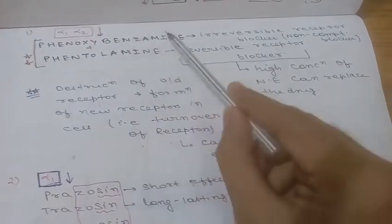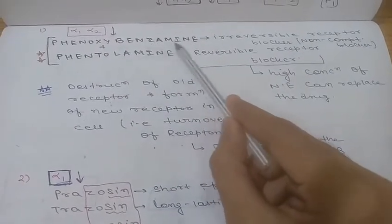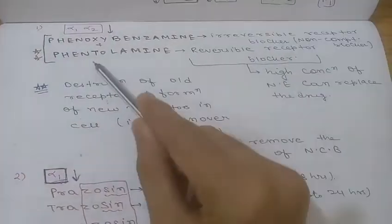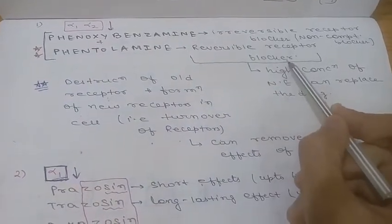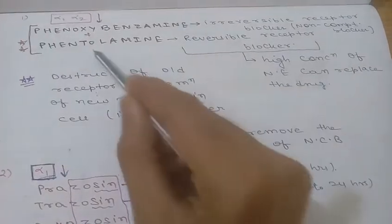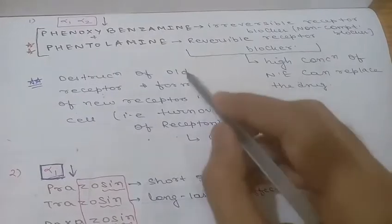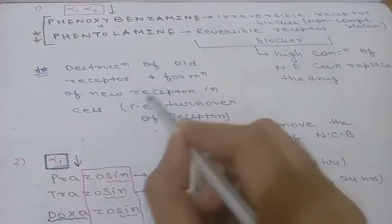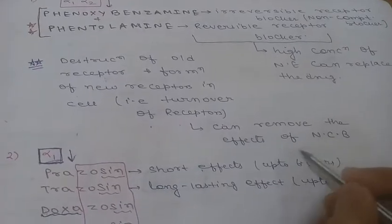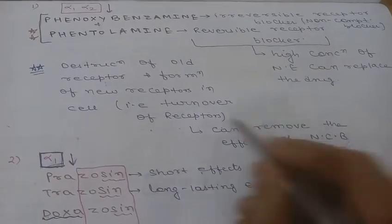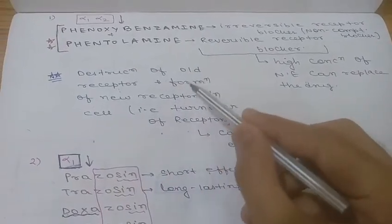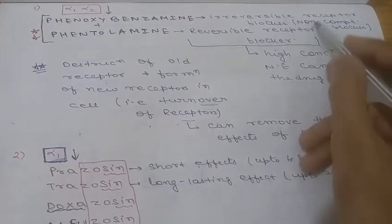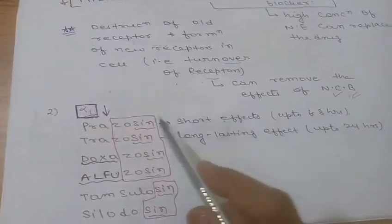One difference between them: phenoxybenzamine is an irreversible, noncompetitive receptor blocker. Phentolamine is a reversible receptor blocker — higher concentrations of norepinephrine can replace its blocking effect. The effect of a noncompetitive blocker can also be removed by destruction of old receptors and formation of new receptors, which is known as receptor turnover.